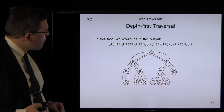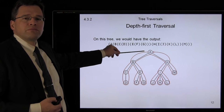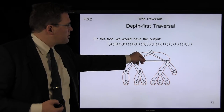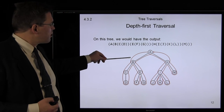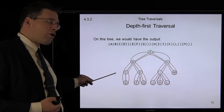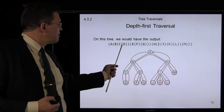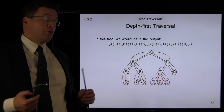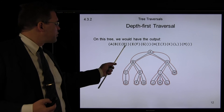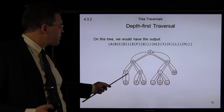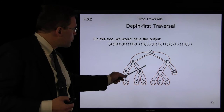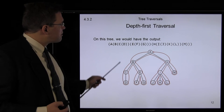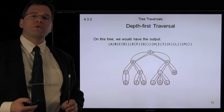On this particular tree: we start at the root node and print an opening parenthesis and node A. We then step through each of its children, calling depth-first traversal on B first — printing an opening parenthesis and B, then visiting all of B's children. We print opening parenthesis C, opening parenthesis D, but D has no children, so we print a closing parenthesis and return. C has no more children, so we print a closing parenthesis and return. B has another child, so we recursively call depth-first traversal on B's second child. We repeat this procedure until we've returned to the root and visited all of its children.